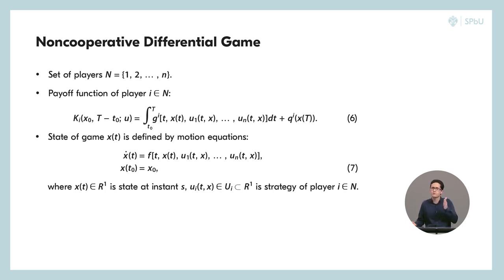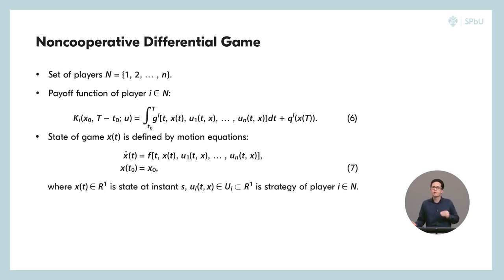The strategies are u1(t,x), u2(t,x), ..., un(t,x). At the beginning of the game, players choose their strategies — how they are going to behave for each time instant t and each state of the game x, or each market share. We will go to that later.